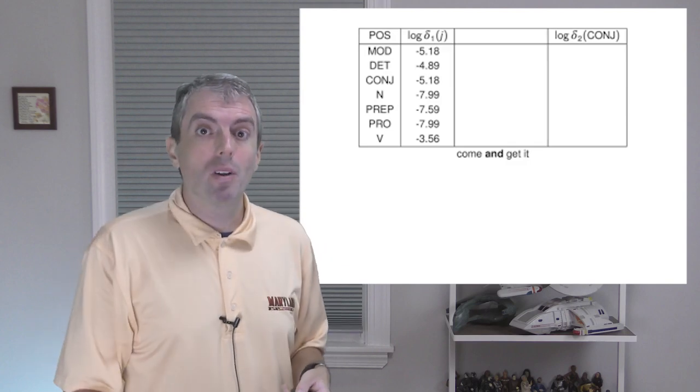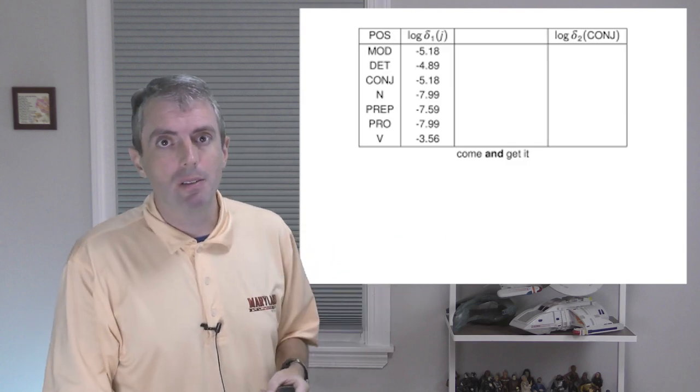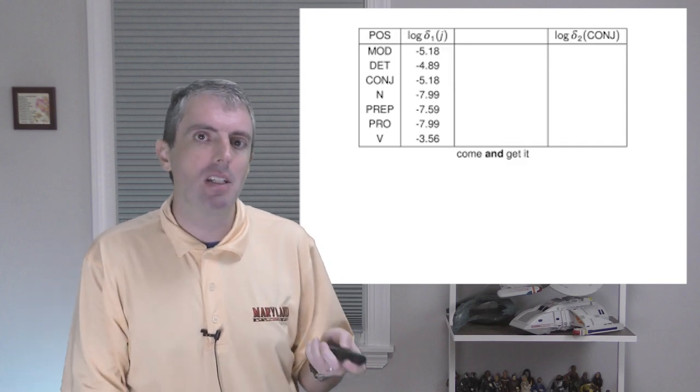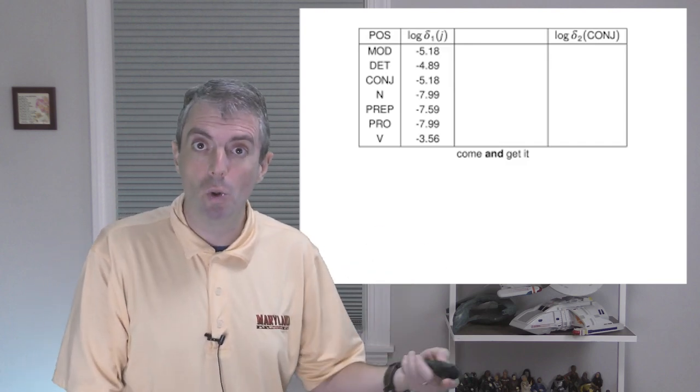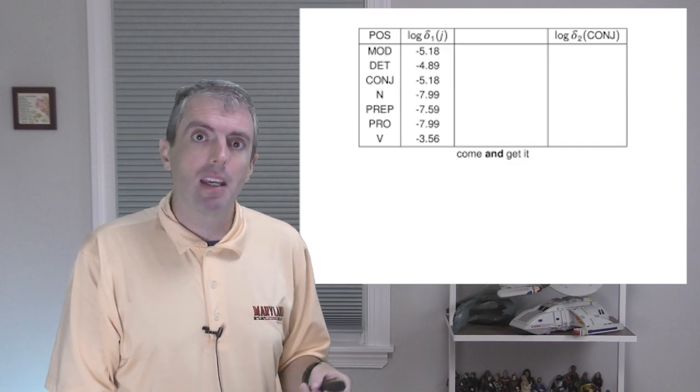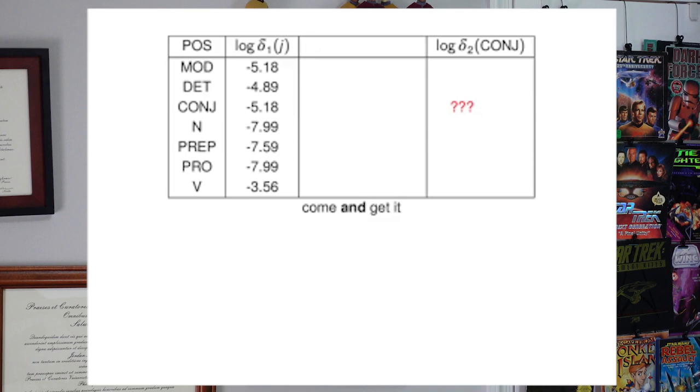So let's do that, let's extend it out one more step going from time one to time two. So what we want to do is we want to figure out what is the highest probability part-of-speech sequence that can get us to time two in each of our parts of speech. We'll end up doing this for every part of speech eventually at time two, but for the sake of concreteness, let's just do it for conjunction at first.